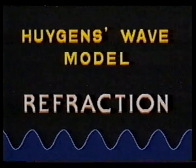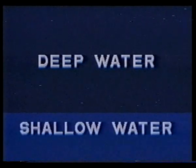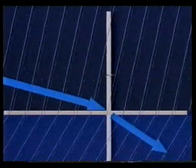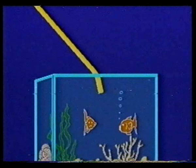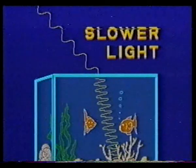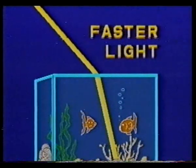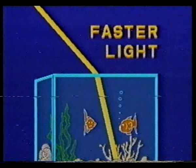Huygens also used water waves to explain refraction. When waves move from deep water into shallow water, they change direction and slow down. The result is a change in the direction of wave propagation towards the normal. In much the same way, a beam of light changes direction as it passes from air into water or glass. Huygens reasoned that if light is a wave, since it bends towards the normal, it must move slower in the new medium.